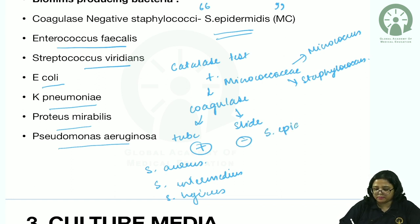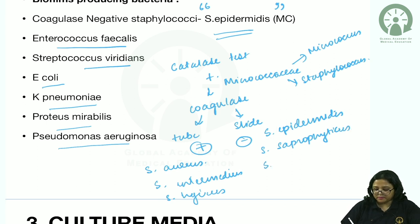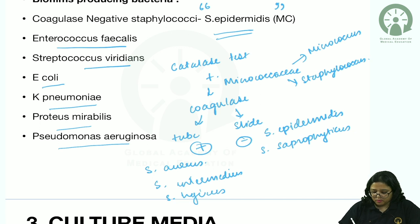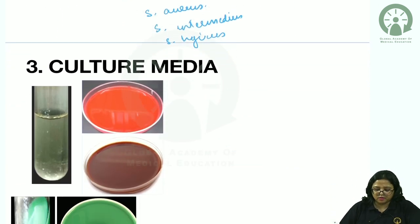Staphylococcus saprophyticus is a cause of UTI in sexually active, pregnant, or young females. There are many other coagulase-negative staphylococci species. After this brief discussion on physiology of bacteria and biochemical tests, let us move on to culture media.